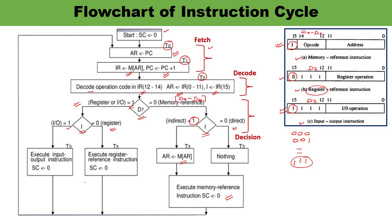At the end, in each of these three cases — whether input-output, register reference, or memory reference — after the instruction is executed, the sequence counter is cleared and the control returns to the fetch phase with T0 equal to 1. This is how you can explain the flowchart of the instruction cycle. To explain it, you must be aware of the various sub-cycles and the three different types of instruction formats. Thank you so much for watching this video.